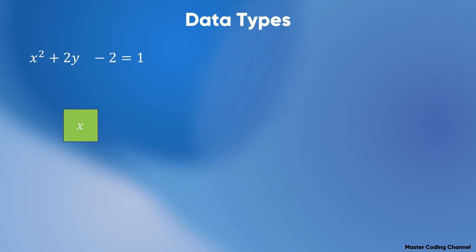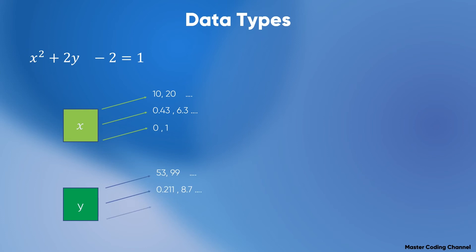Every language has data types, but the main concept and the primitive things common between all languages are integers, decimals, real numbers, positives, and negatives. So x could be 10, 20, 30, or 0.43, 0.1, and so on. Y can be 53, 0.211, 0.1, and so on. A value may be an integer as a complete number, a float like 0.43 or 6.3, or a boolean like 0 and 1. These are the primitive data types commonly used across different coding languages.